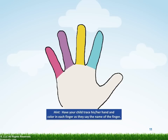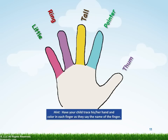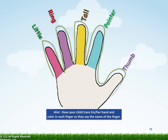This is a left hand. Did you know that each finger of the hand has a name? Let's learn those. The first is the little finger. The ring finger. Tall finger. Pointer finger. And thumb. Let's watch as we trace around the fingers of the hand. Good job!